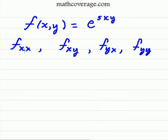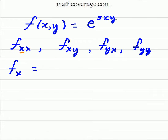Let's work on this one first. When we take the second partials, we're going to start with f_xx. That means we need to first take the first partial with respect to x — leaving y totally alone, treating it like a constant or a coefficient. The derivative of x is 1, so we just rewrite 5y and then rewrite e to the 5xy.